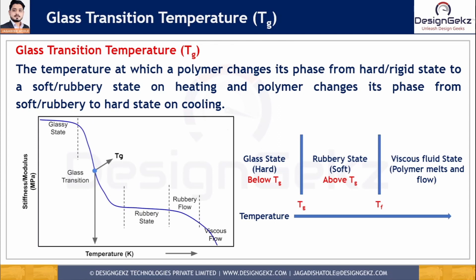Schematically, the glass transition temperature is denoted as Tg. Below Tg, the polymer is hard or brittle, and above Tg, the polymer is soft or rubbery. Above the flow temperature Tf, the polymer melts and flows — meaning the polymer will be in a viscous fluid state.